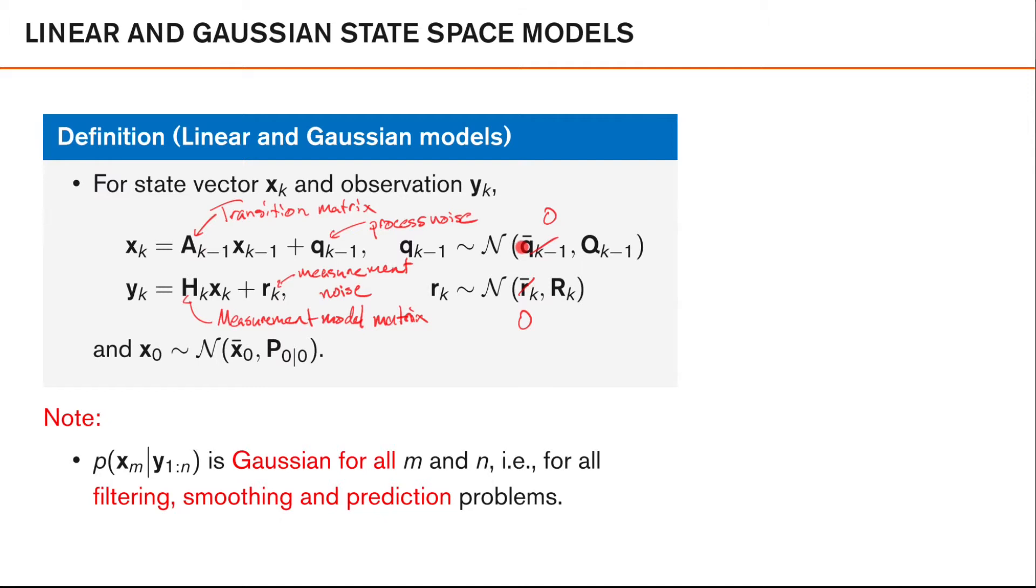So one of the more important properties of these models is that any conditional distribution on x, given a set of measurements, is a Gaussian distribution. So the distribution of x_m, given observations from 1 to n, is Gaussian for all m and n.